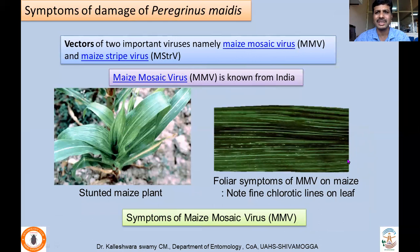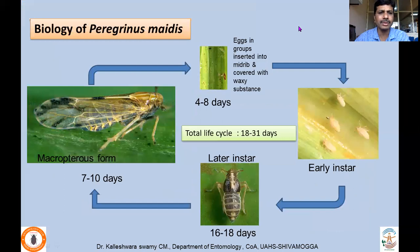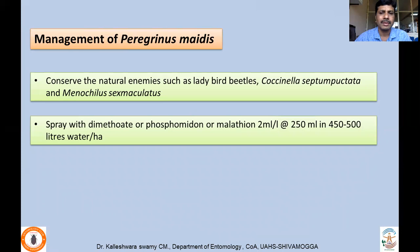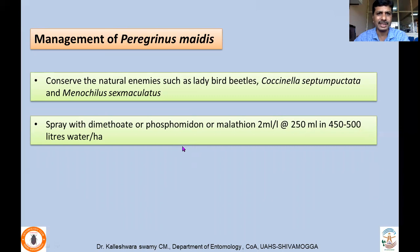Regarding the biology of Peregrinus maidis, eggs are inserted into the midrib and covered with a waxy substance. Early instar nymphs are cream colored and later turn grayish. Both macropterous and brachypterous forms are found; macropterous forms appear when migration to other fields is needed. For management, conserve natural enemies such as Coccinella septempunctata and Menochilus sexmaculatus, and spray with dimethoate, phosalone, or malathion at 250 ml in 450–500 liters of water (2 ml per liter). Poor understanding of ecology limits IPM strategy development, so insecticides remain the primary control.